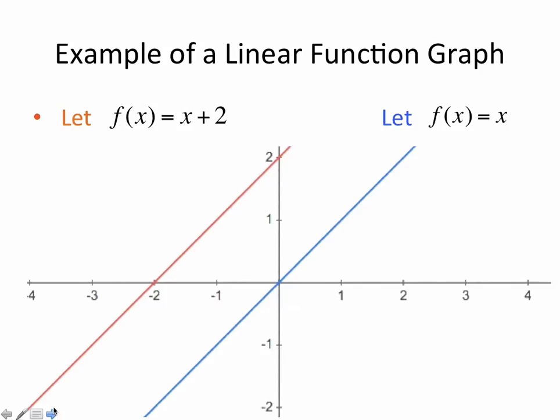On this slide, we have two simple linear functions. The first one is the simplest one of all, and that would be f(x) = x. Notice there is no c value here. That is because c in this case is 0. So, that means this graph intercepts the y-axis at the point (0, 0). It is a straight line that passes through the origin.